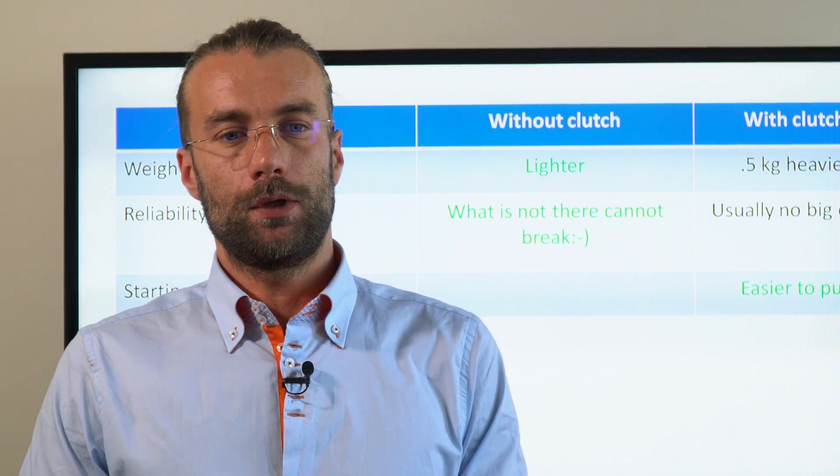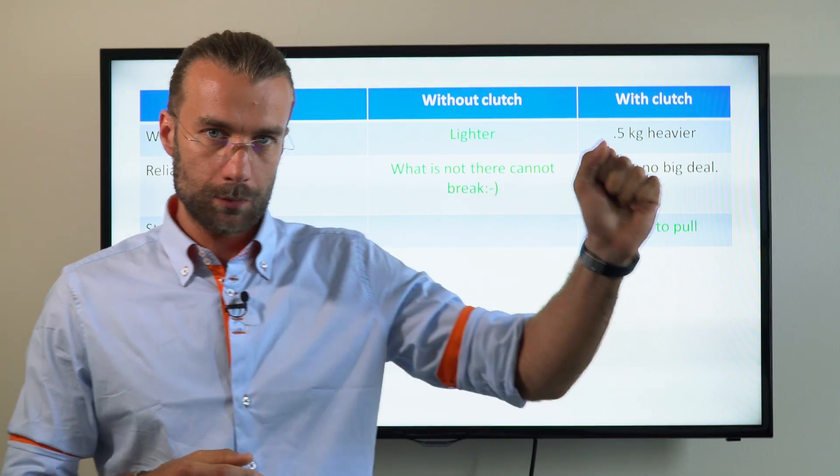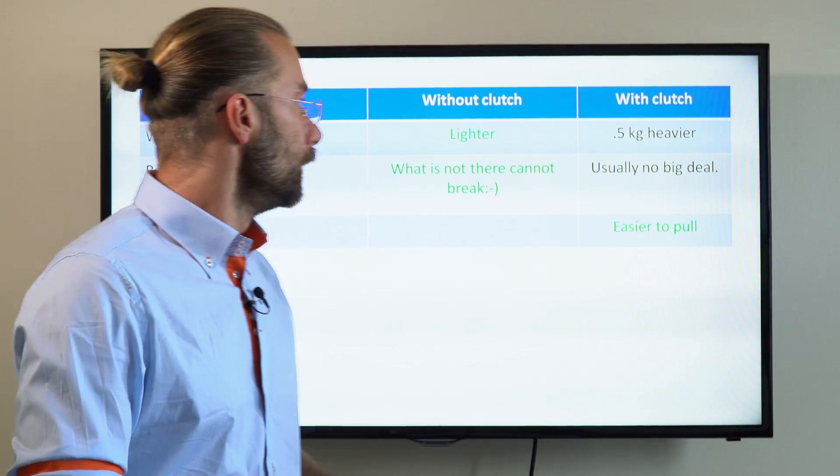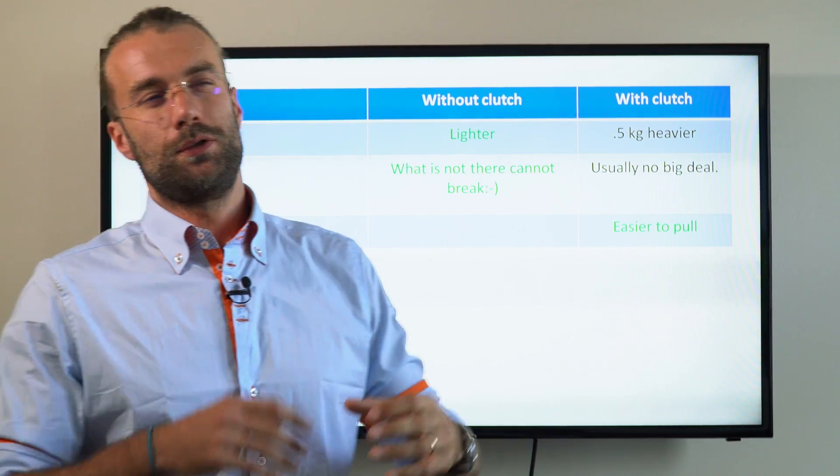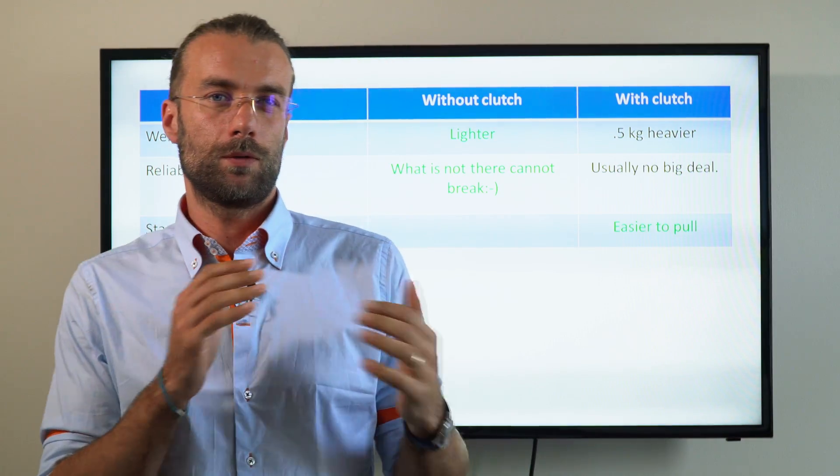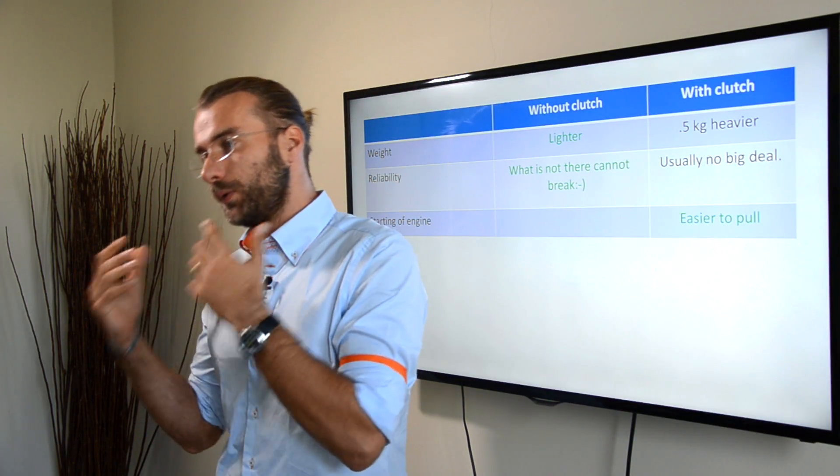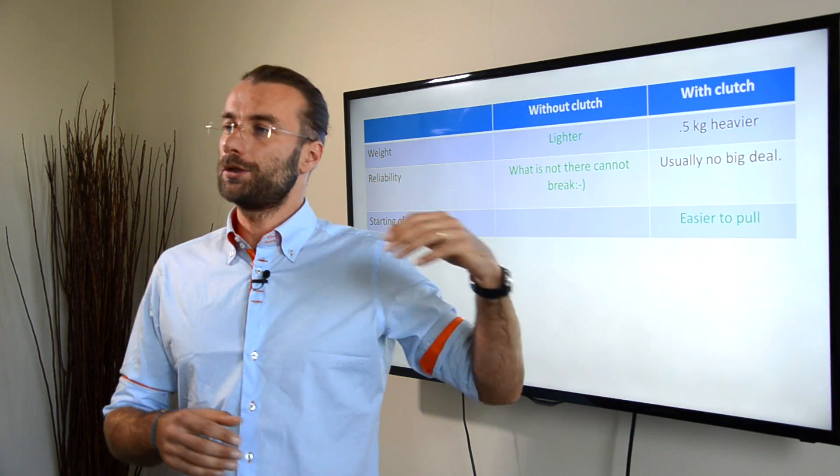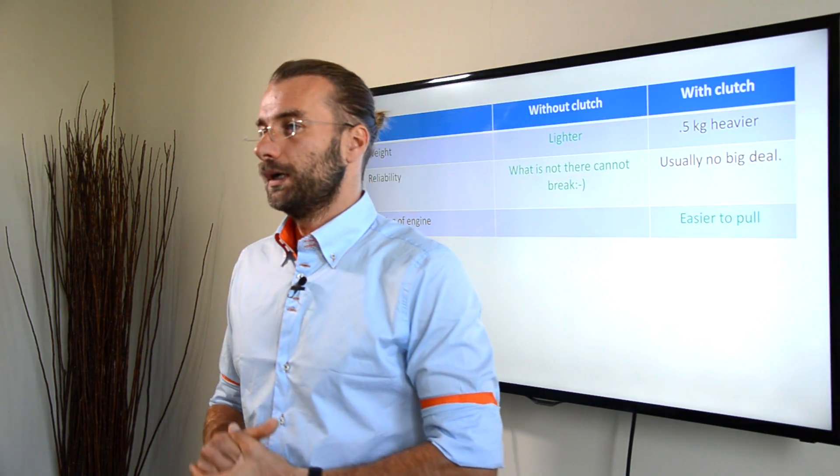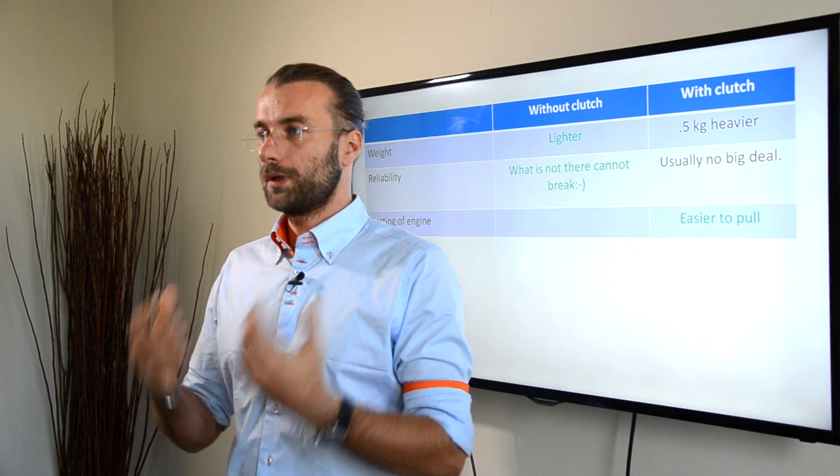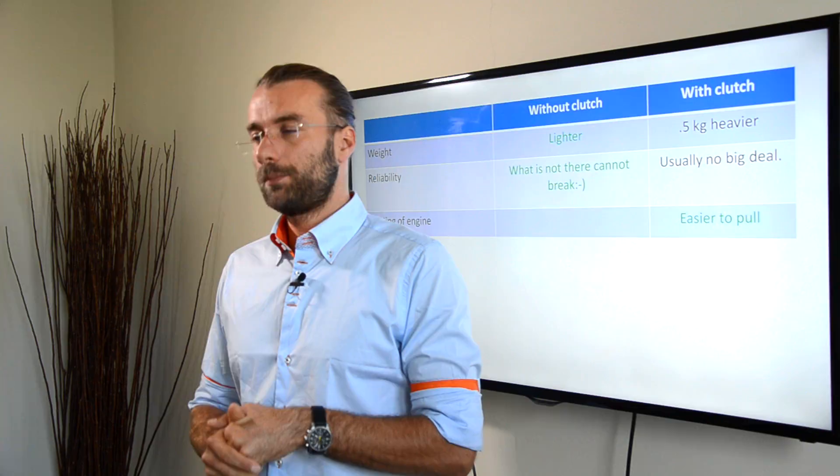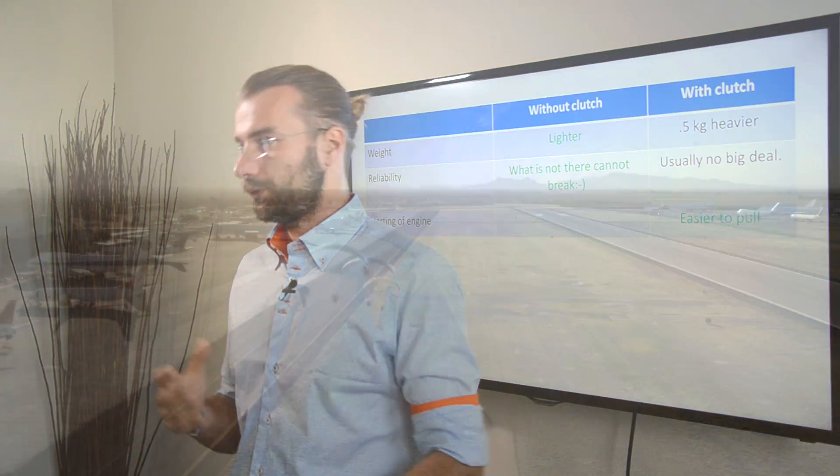We've noticed that during the starting period, during pulling the cord, on engines without clutch, you roughly reach around 1000-1200 RPM on the engine, while with paramotors with clutch, you actually reach 2500. So, the engines with clutch are happier to start on the first or second pull.